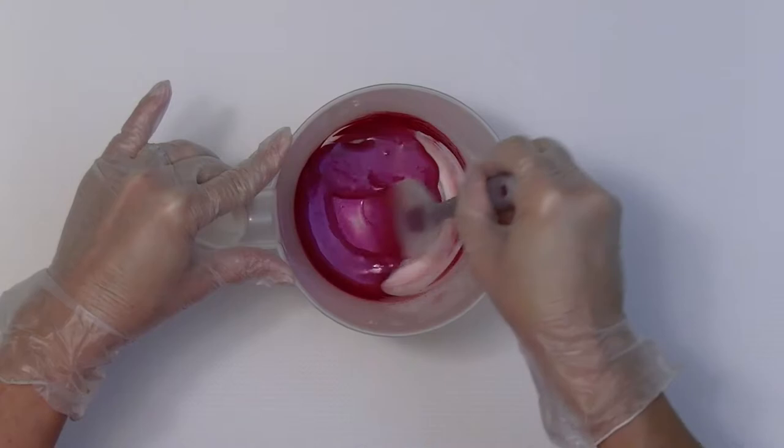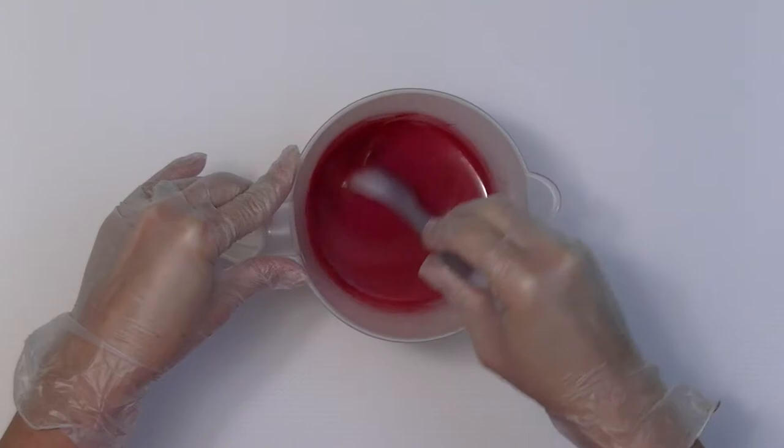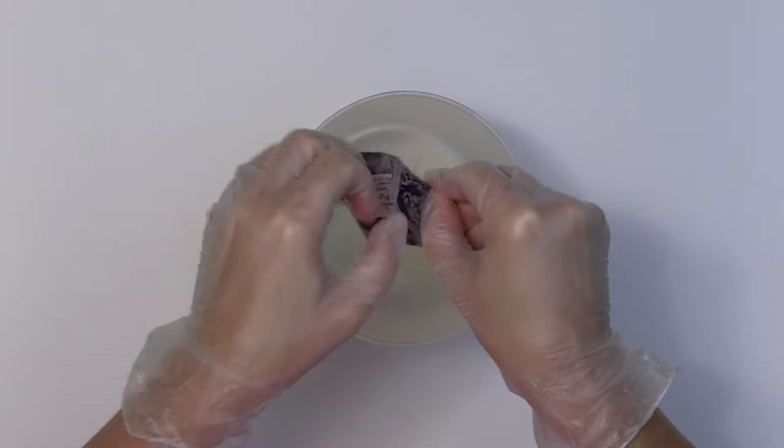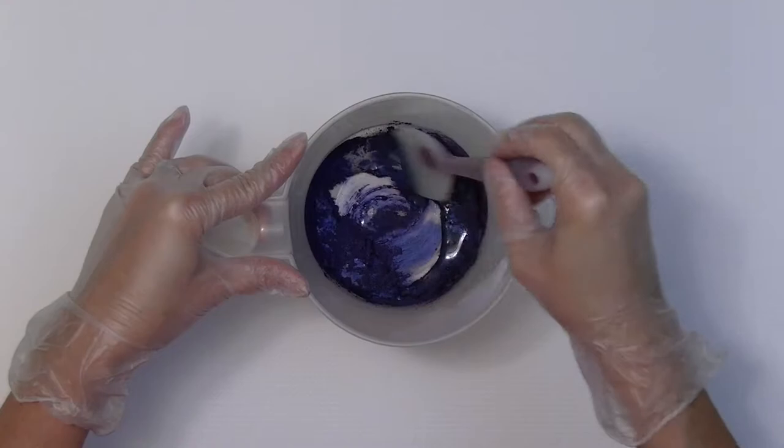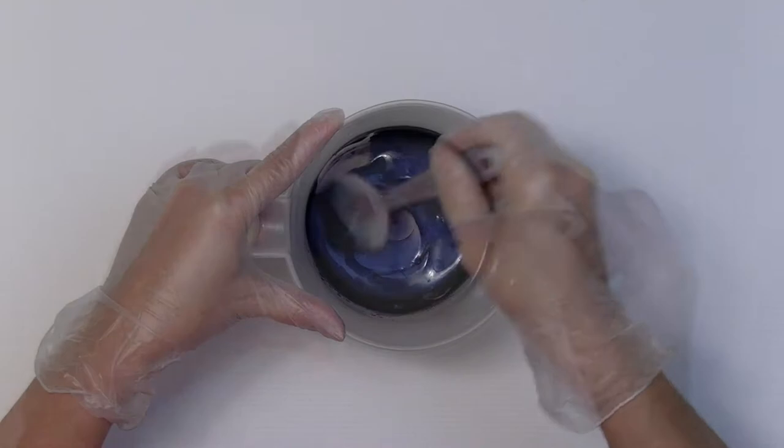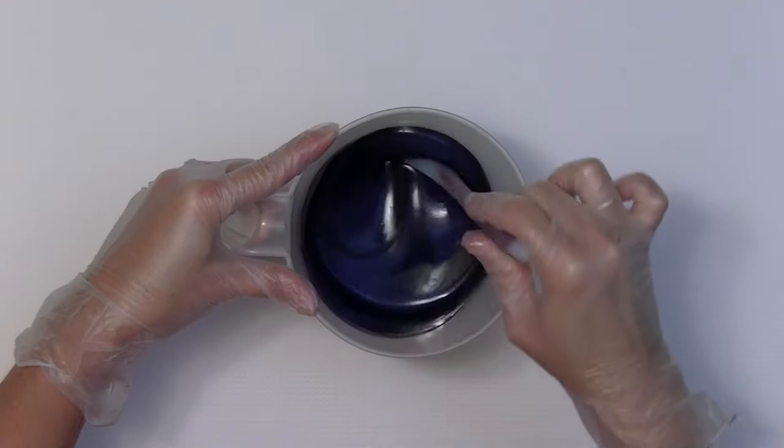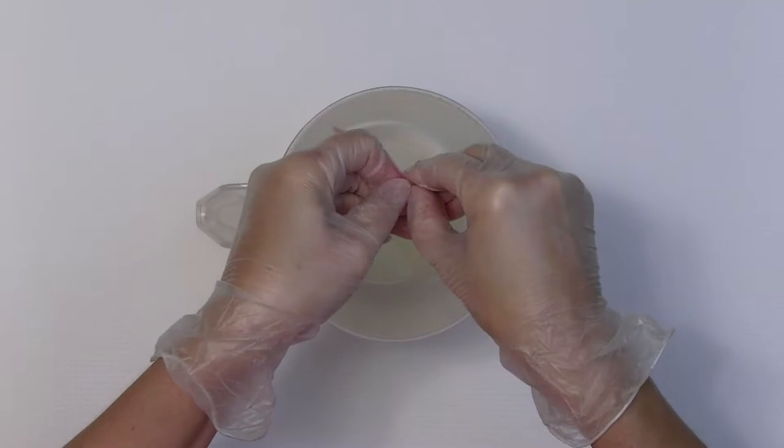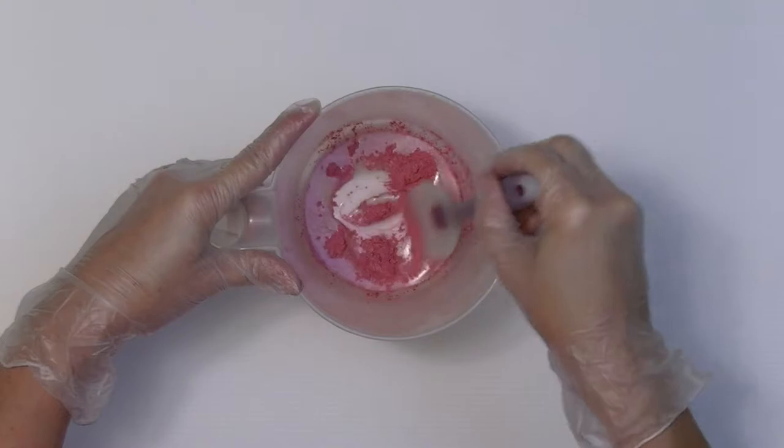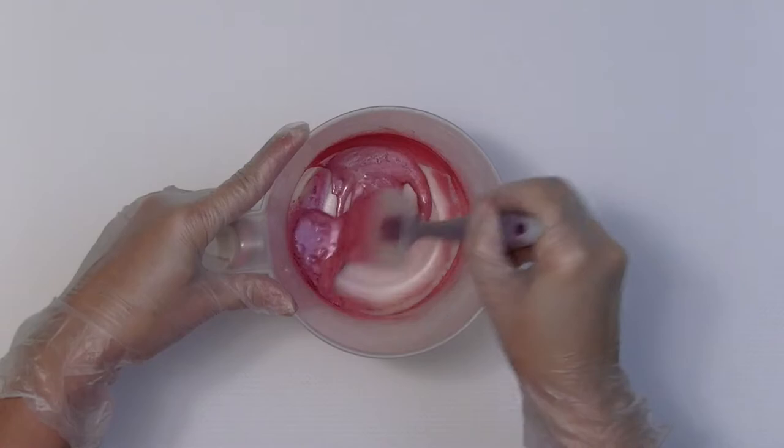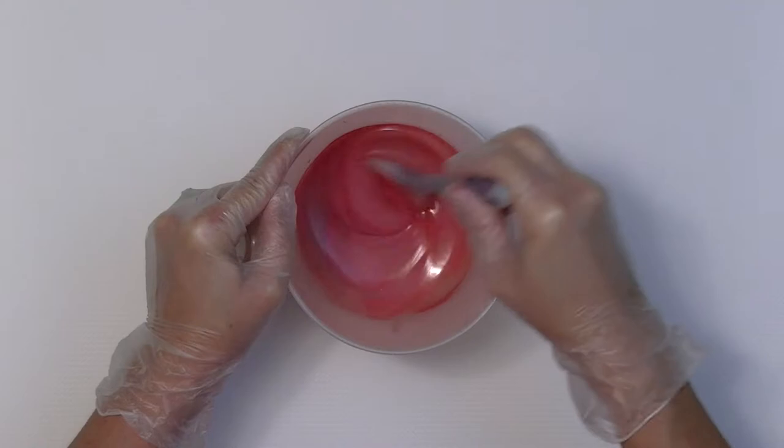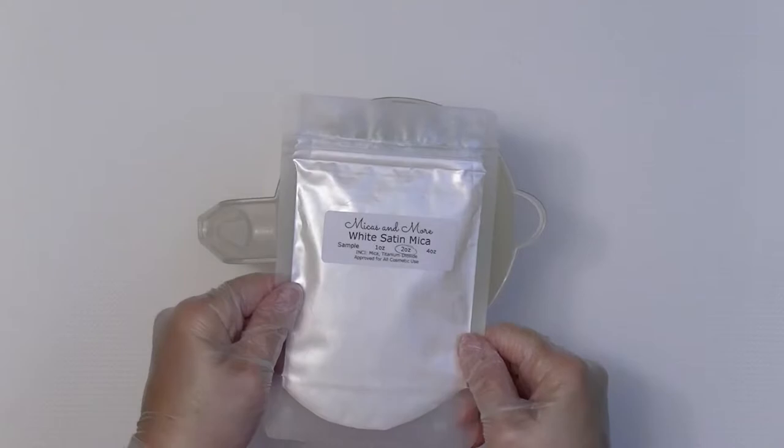Now the majestic purple mica. And then the soft pink mica. White satin mica is mixed in oil and then added to the other three cups of soap.